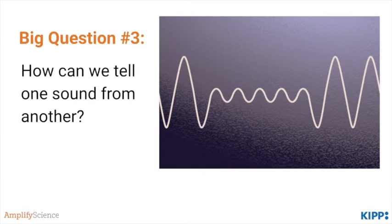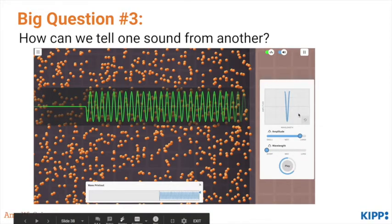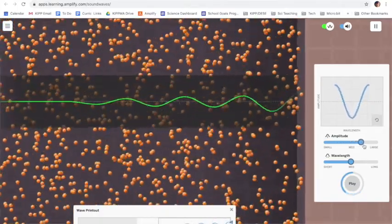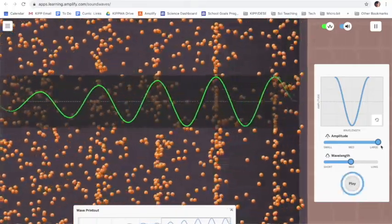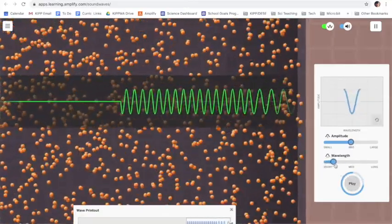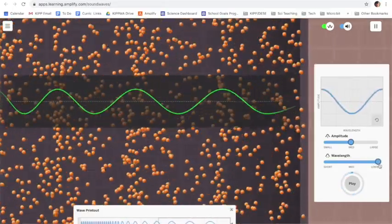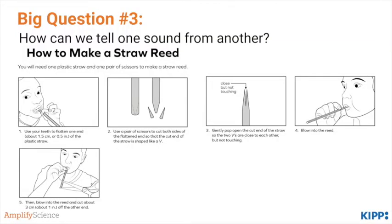On to big question number three: how can we tell one sound from another? Now that we've established how sound travels, how was the baby calf able to distinguish its mother's call from other dolphin calls? To understand this, we dig more deeply into what distinguishes one wave from another by studying the parts of waves. Students experiment with changing the amplitude of a wave in the simulator — dragging the bar larger or smaller changes the volume. They hit play, hear the difference, and see the effects on the particles and waveforms. Students also experiment with changing the wavelength from short to long, hearing the difference in pitch. They also create their own musical instrument from a straw and feel how it rapidly vibrates to make a high-pitched noise.